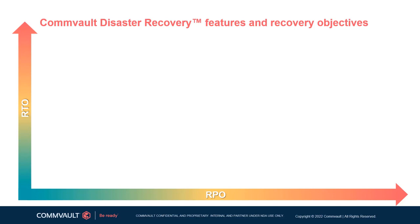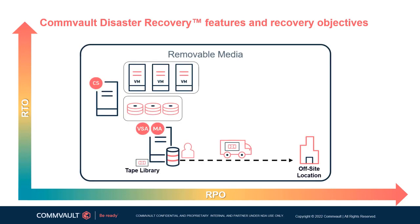We'll explain features specific to Commvault Disaster Recovery mapped to recovery objects, but first we will discuss the methods associated with Commvault Backup and Recovery. The first option is a backup or auxiliary copy to removable media such as tape. This provides a cost-effective and portable way of storing recovery points in an off-site location. However, performing DR from tape is unlikely to provide an acceptable RTO for most customers and is more likely suited as a long-term retention option for compliance purposes.